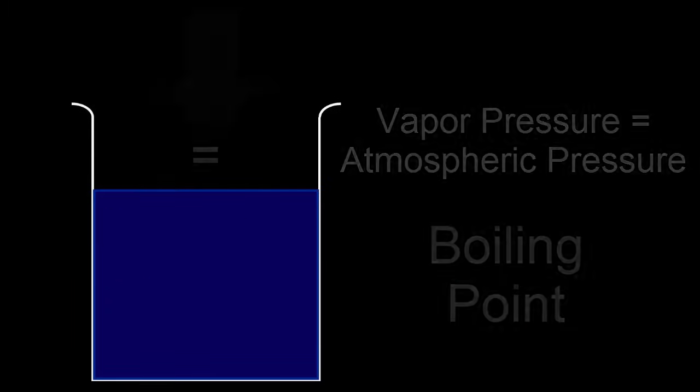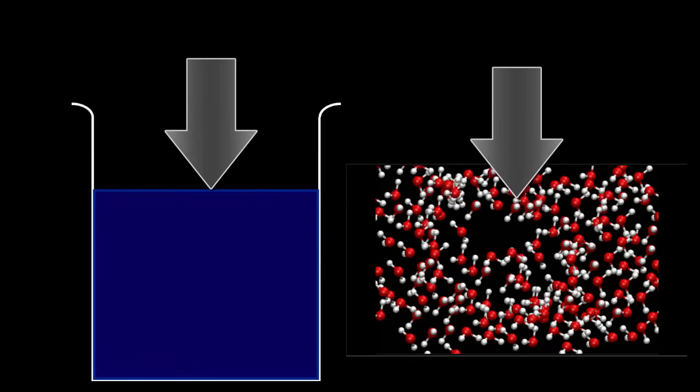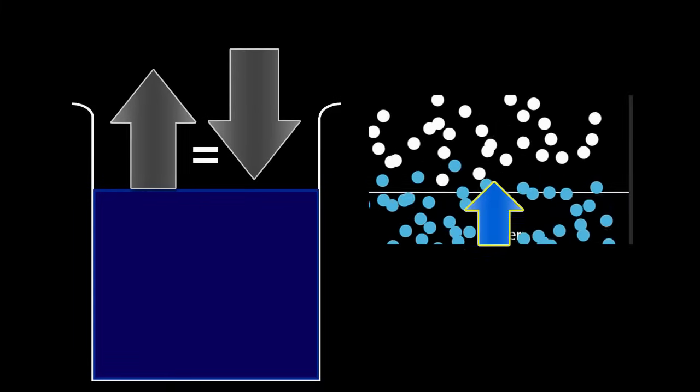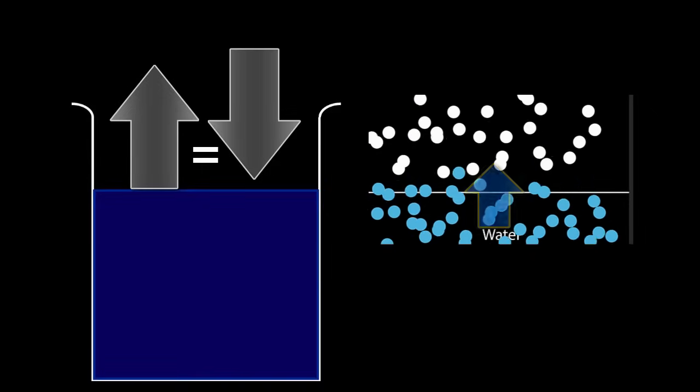Think of it this way. Atmospheric pressure pushes down, and that makes it difficult for the water molecules to spread out and form a bubble. But when the vapor pressure increases, molecules from the liquid escape, and they push against the air molecules and effectively reduce some of the pressure.